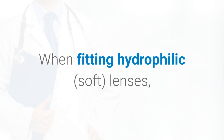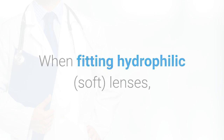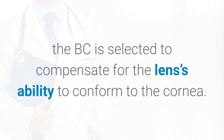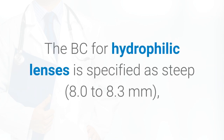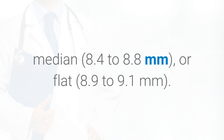When fitting hydrophilic soft lenses, the BC is selected to compensate for the lens's ability to conform to the cornea. The BC for hydrophilic lenses is specified as steep 8.0 to 8.3 millimeters, median 8.4 to 8.8 millimeters, or flat 8.9 to 9.1 millimeters.